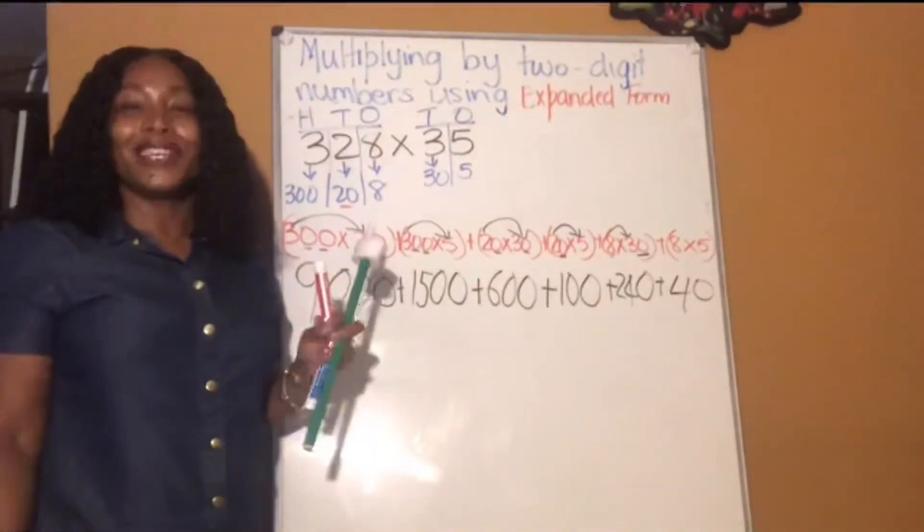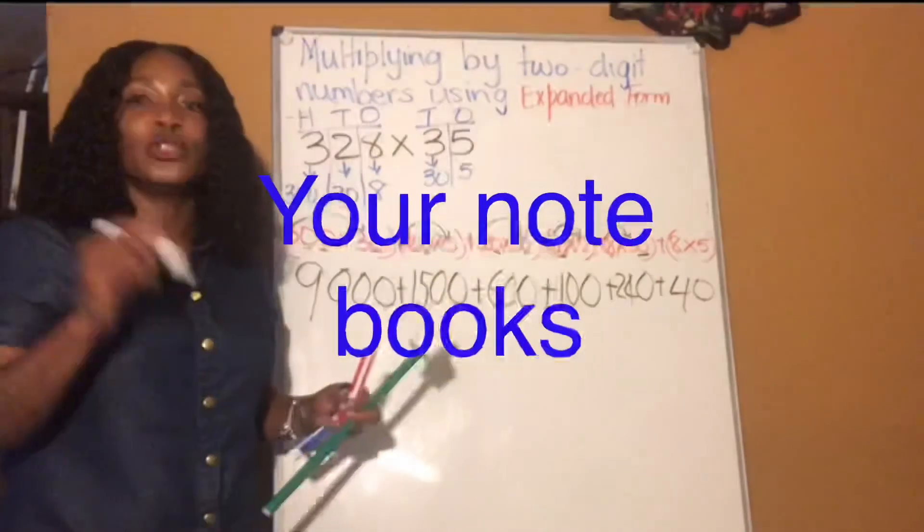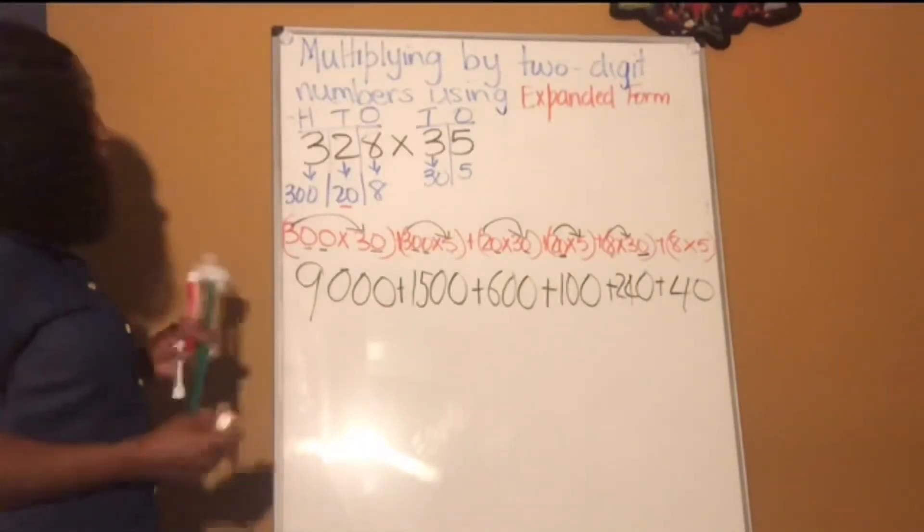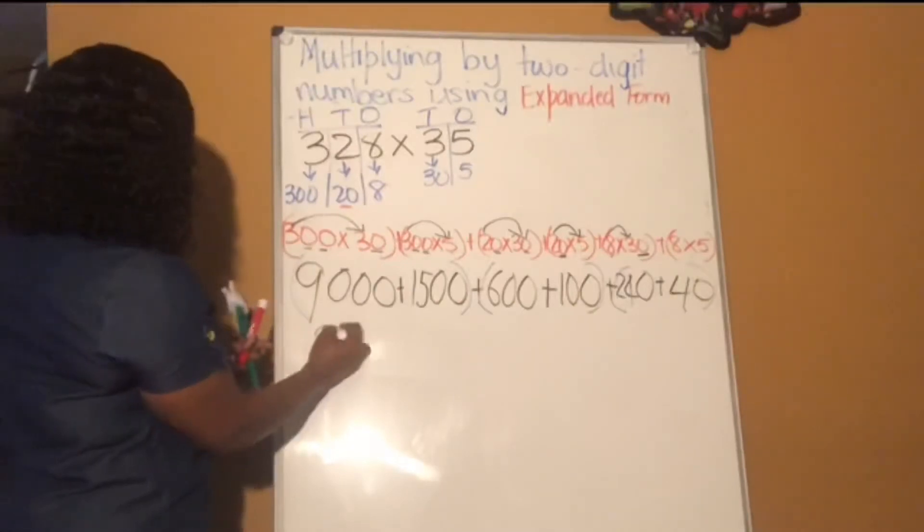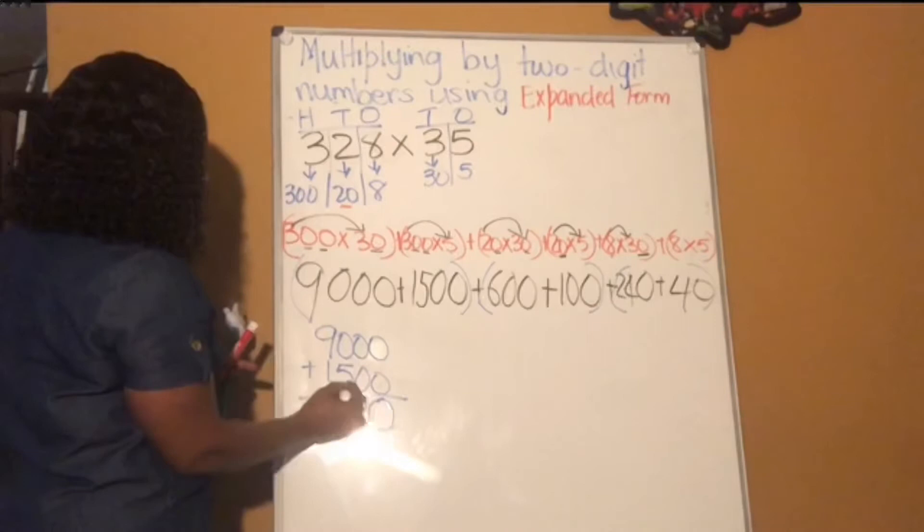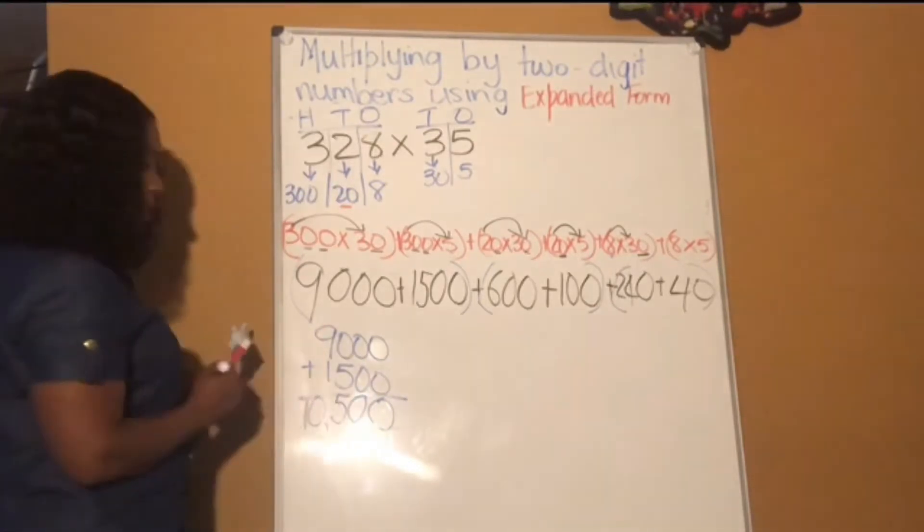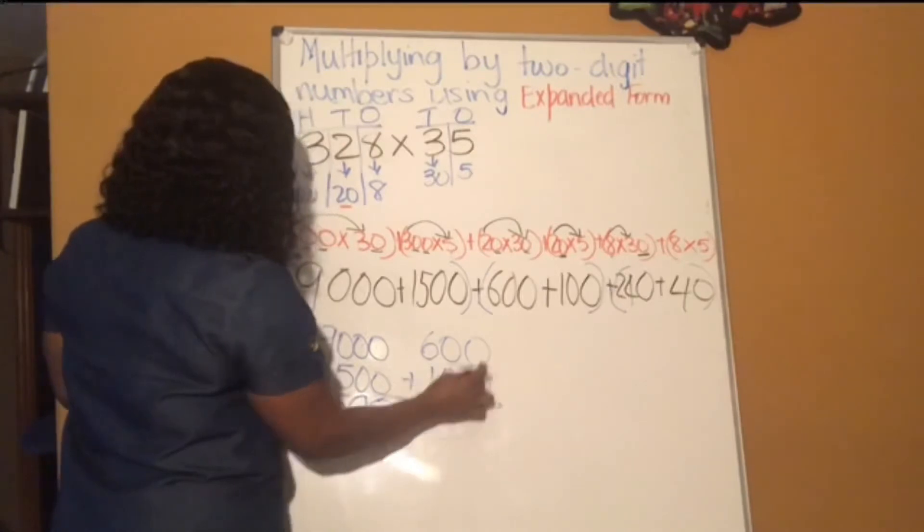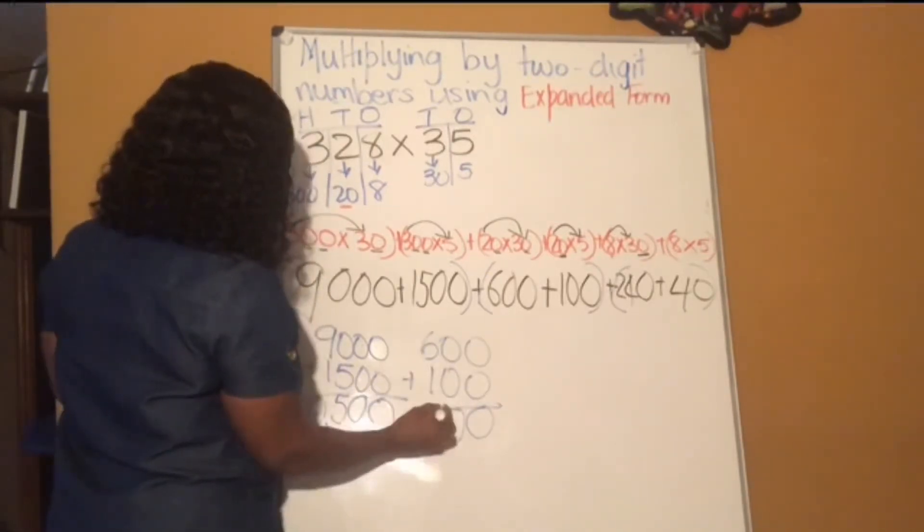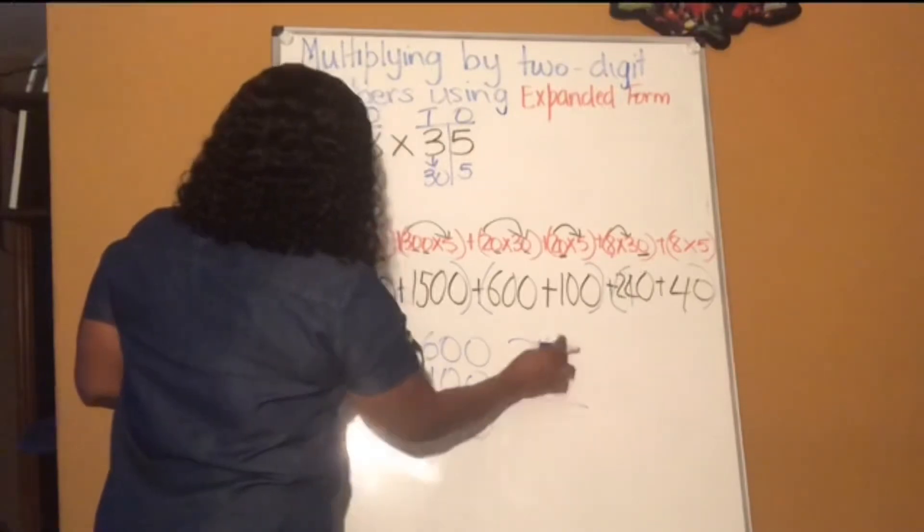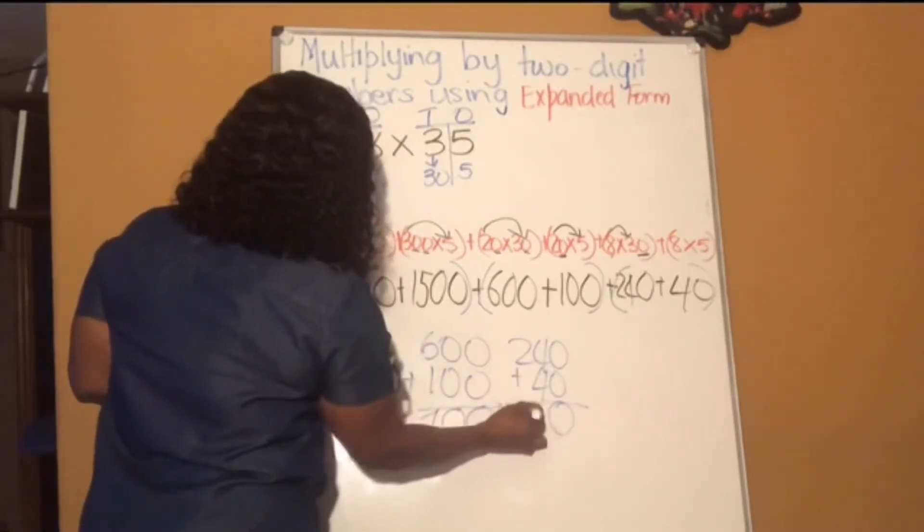Remember guys, use your fingers or use the board to skip count. It's easy. It's long but it's easy. Now we're going to add all these partial products. Let's go. 9,000 plus 1,500. 0 plus 0 is 0. 0 plus 0 is 0. 5 plus 0 is 5. And 9 plus 1 is 10. Then 600 plus 100. 0 plus 0 is 0. 0 plus 0 is 0. 6 plus 1 is 7. Then 240 plus 40. 0 plus 0 is 0. 4 plus 4 is 8. And 2 plus nothing, 2.